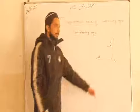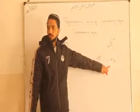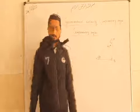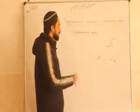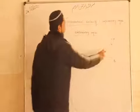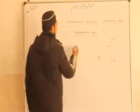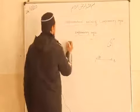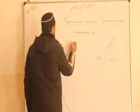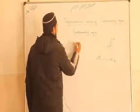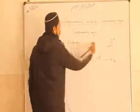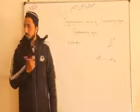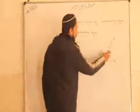It will be 90 minus theta, of course. Because this is your 90 degree angle, and if we are taking this theta, then this will be 90 minus theta. So, what is the relation between these? Suppose we are finding the sine of this angle. Sine of this angle means sine of (90 minus theta). The value of sine is perpendicular upon hypotenuse.